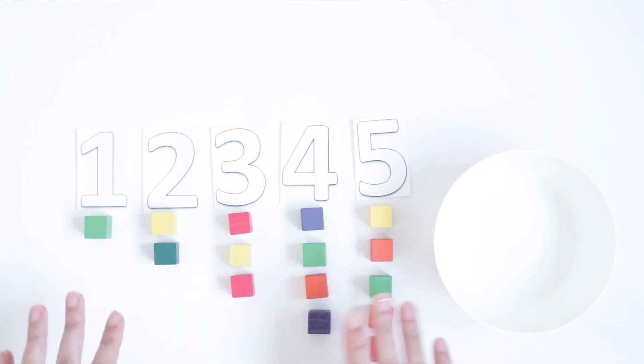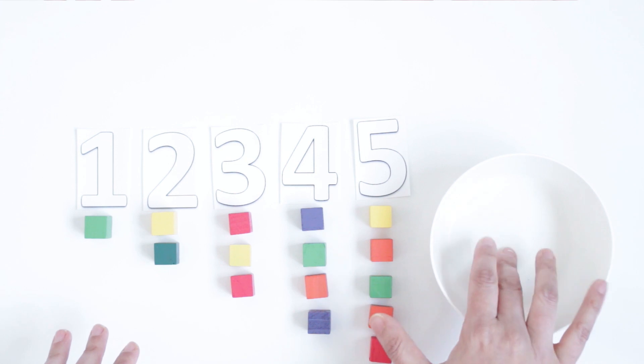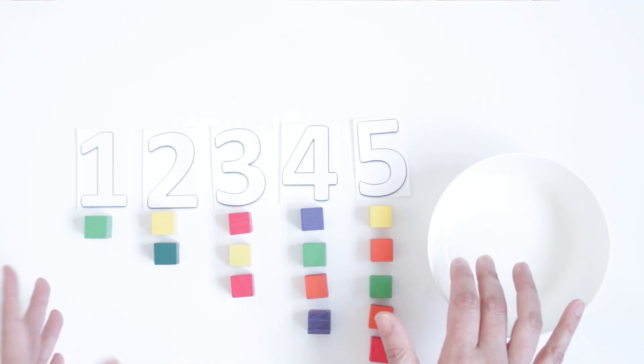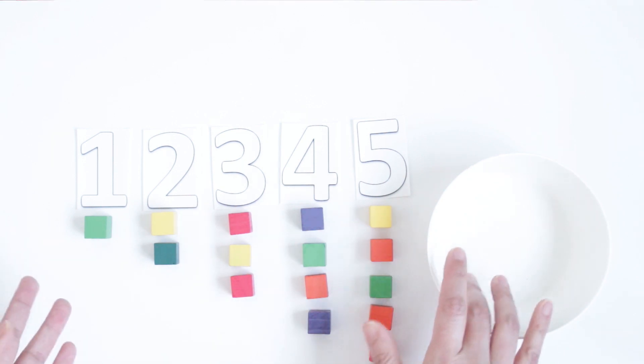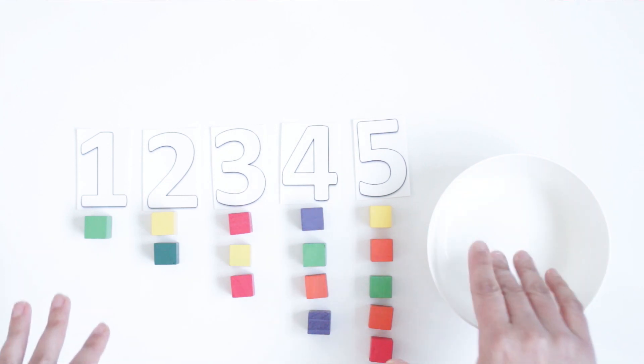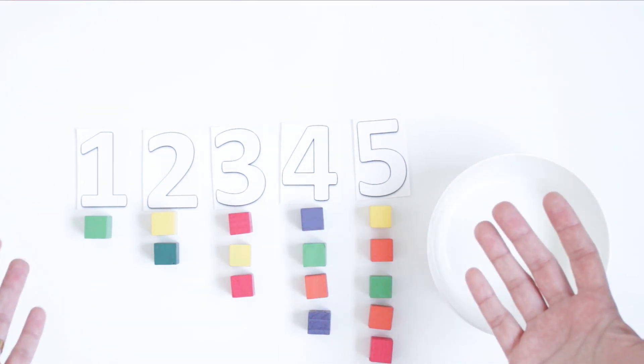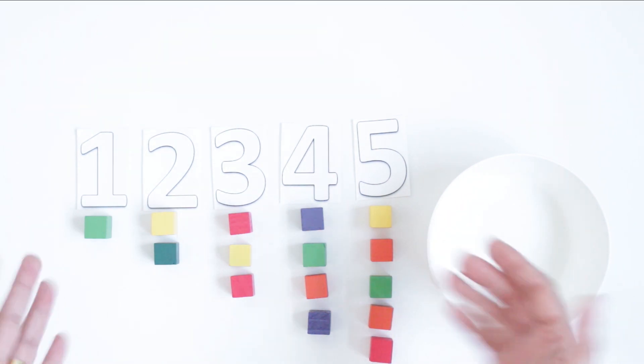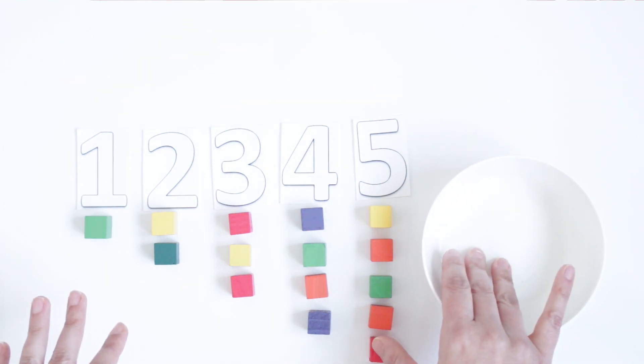The most important thing is for you to have the exact number of pieces in the container that you're going to give them. This way they can easily check if there is something wrong. For example, if there is something extra here or some piece missing, they are going to figure out there is something wrong. So you should give them the exact number of pieces in the container.